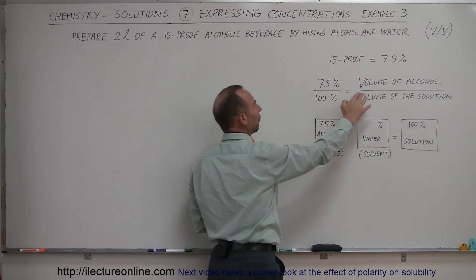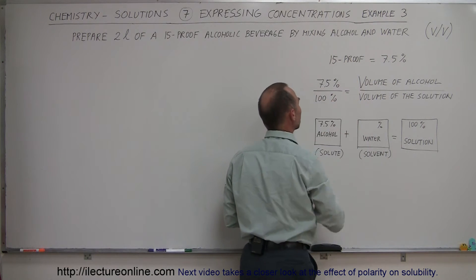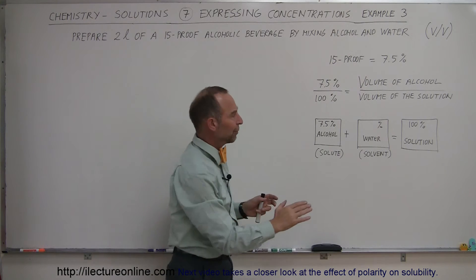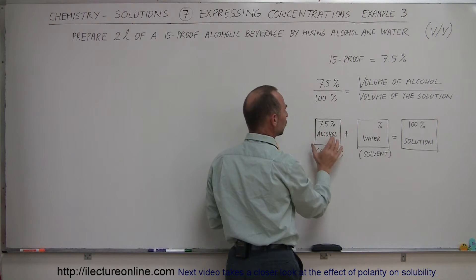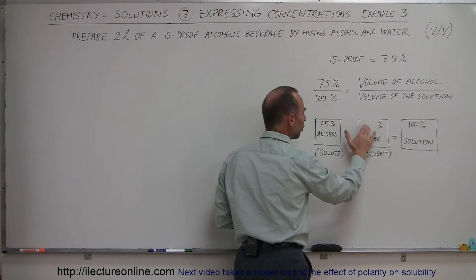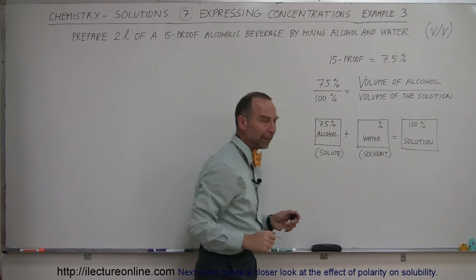So the ratio of volume of alcohol to volume of solution is 7.5% to 100%. If we write this out with little boxes, 7.5% of the solution is alcohol, and we have some unknown percent of water together, which makes 100% of the total solution.